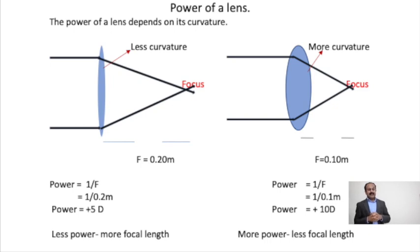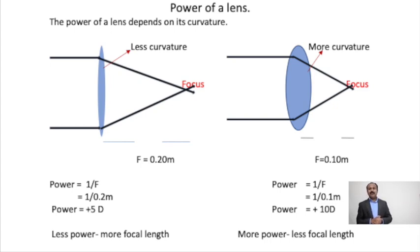The focal length of the second lens is 10 cm compared to 20 cm for the first lens. When you increase power, focal length decreases. The power of the second convex lens is 1 / 0.1 = +10 diopters. So: more power means less focal length; less power means more focal length. The power of a convex lens is positive and the power of a concave lens is negative.